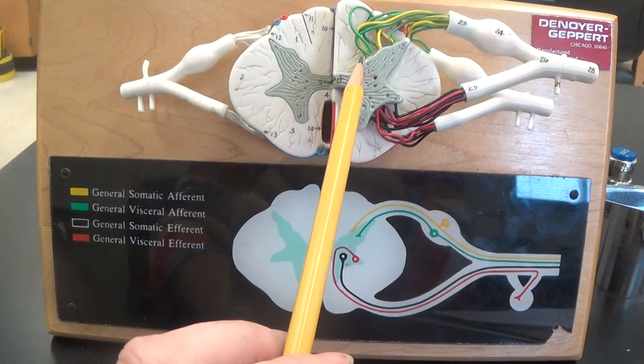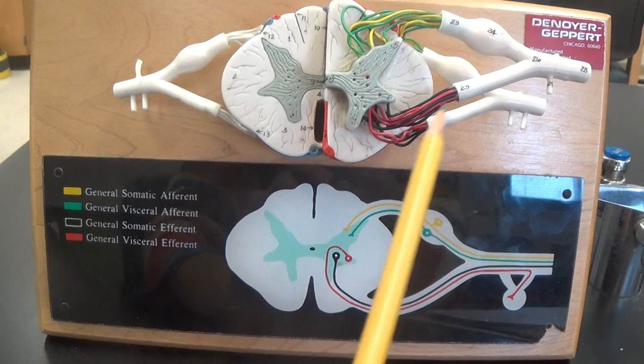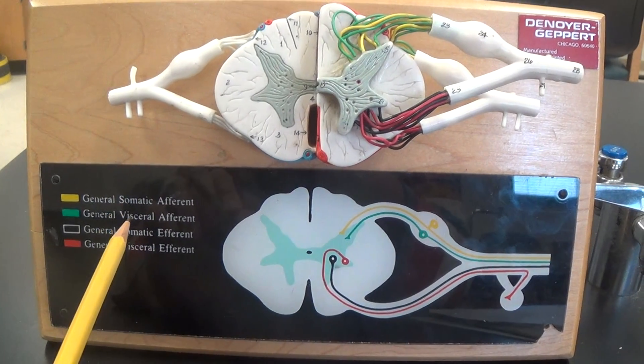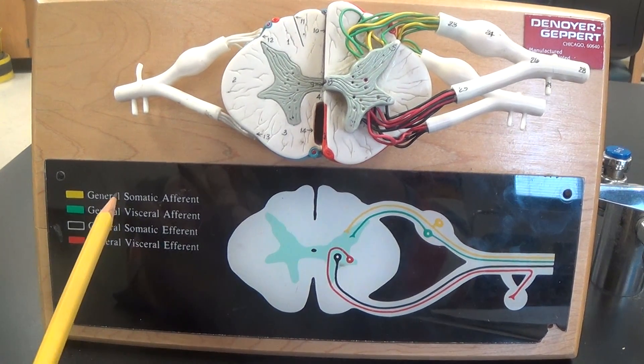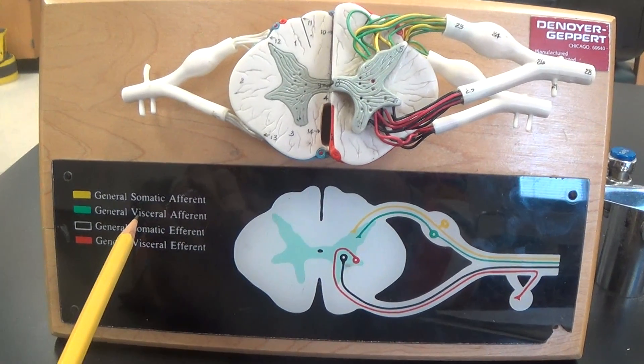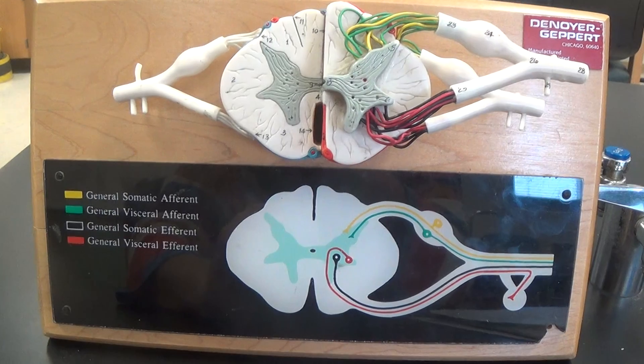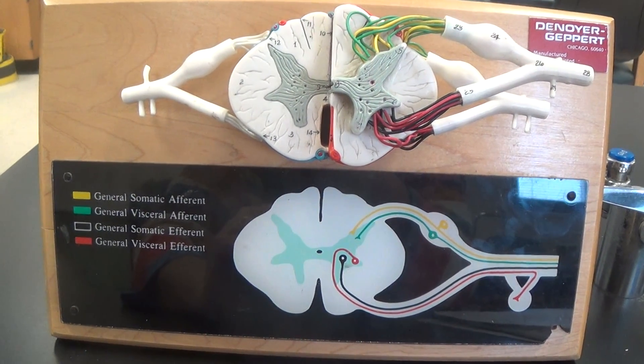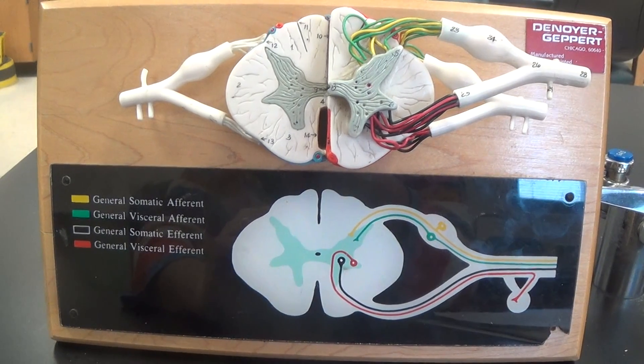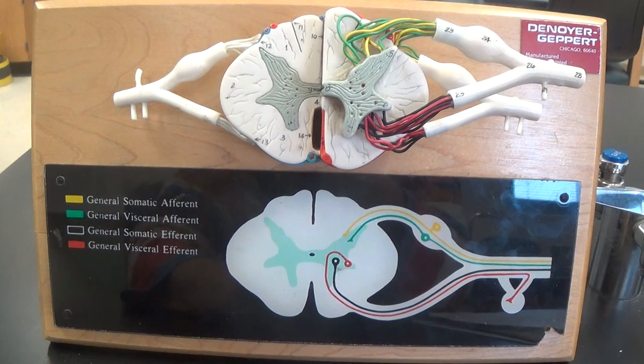So afferent is dealing with the sensory stuff. Efferent is dealing with motor material. Then you have somatic versus visceral. Somatic includes the skeletal muscles. That's the voluntary stuff. The visceral stuff you can think about the abdominal region where you've got smooth muscle, the thoracic region where you have cardiac muscle, and we have lots of glands through these areas. So the black is somatic and the red is visceral.